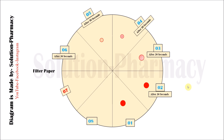On section 6 of the filter paper, a very small spot of blood still appears. Then repeat the process after 30 seconds. On the seventh section, no blot — no blood spot — appears on the filter paper. No visible spot of blood appears, so we stop the process. This time is called the bleeding time of that person.